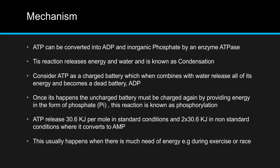Once this happens, the uncharged battery must be charged again by providing energy in the form of phosphate. This reaction is known as phosphorylation. To form ADP we took the phosphate group out of the ATP molecule, and now to make ATP again we need to put that phosphate group back in. This is known as phosphorylation, and the formation of ADP is known as dephosphorylation.